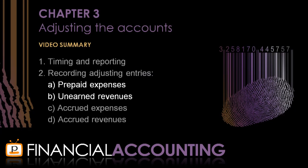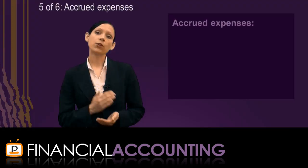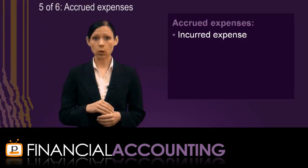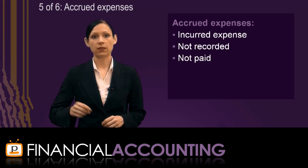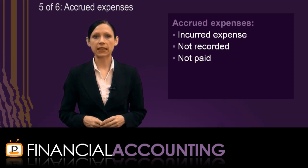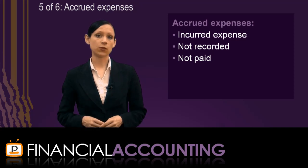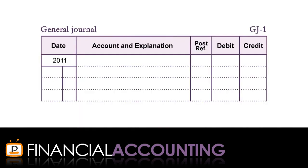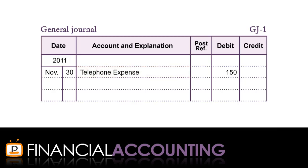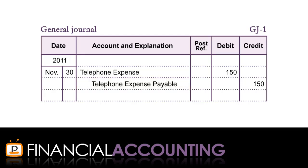Now that we have discussed the two prepayments, we are ready to cover the accruals, starting with accrued expenses. Accrued expenses are expenses that we have incurred, not recorded in the accounts, and not paid for. For example, as part of the fortune-telling business, we incurred $150 worth of telephone expenses for the month. The adjusting entry consists of a debit to the telephone expense account for $150 and a credit to the telephone expense payable account for $150, to recognise that we will pay the telephone bill in a future accounting period when the bill is due.